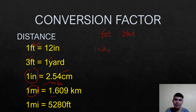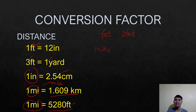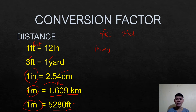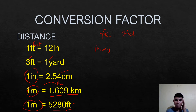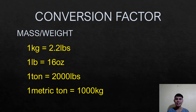One mile is 1.609 kilometers, or in feet, one mile is 5,280 feet. This is where the power of memorization comes in. If you don't memorize these, even if you know how to multiply and divide, it's useless — for example, if you think one inch is 3.9 centimeters, that's wrong and you won't get the correct answer.